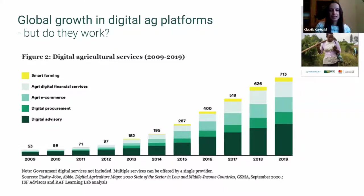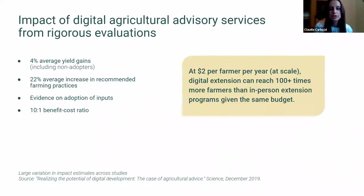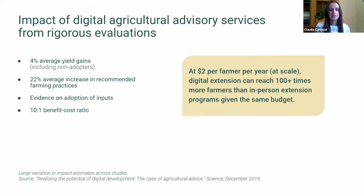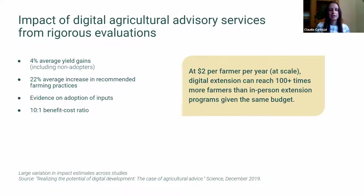The big question is: do they actually work? Looking at randomized control trials, digital extension increases the odds of adopting recommended inputs by 22 percent — from a meta-analysis of six RCTs in East Africa, four of which are from PAD. Digital extension also increases yields by four percent on average, from a Science paper published last year based on seven RCTs in India and East Africa. This four percent may seem modest, but it's an average among all farmers — including those who didn't engage — and those who actually adopt recommendations may see higher impact.